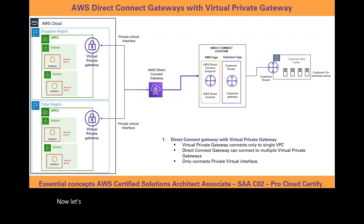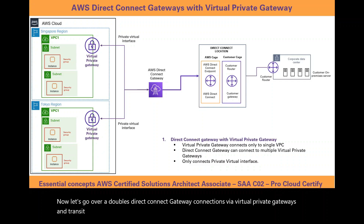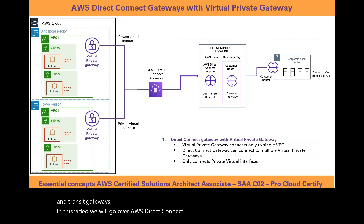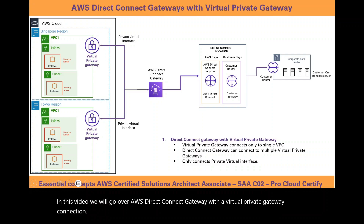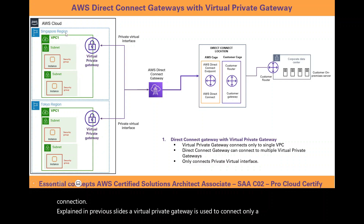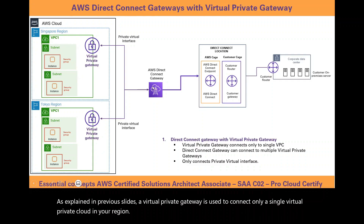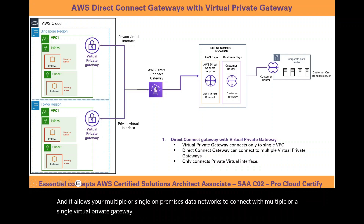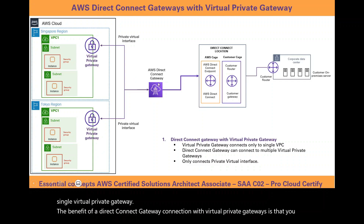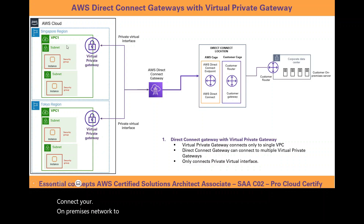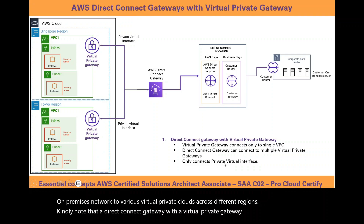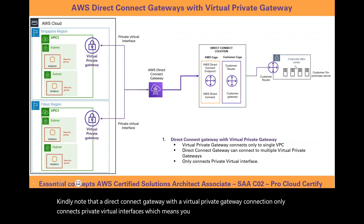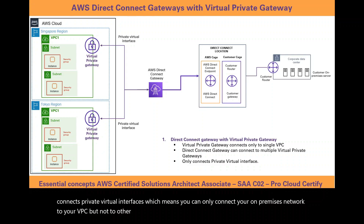Now let's go over AWS Direct Connect gateway connections via virtual private gateways and transit gateways. A virtual private gateway is used to connect only a single virtual private cloud in your region. Your AWS Direct Connect gateway acts as a hub, allowing multiple or single on-premises data networks to connect with multiple or a single virtual private gateway. The benefit is that you can connect your on-premises network to various virtual private clouds across different regions. Note that this connection only uses private virtual interfaces, meaning you cannot connect to other AWS services which require a public virtual interface.